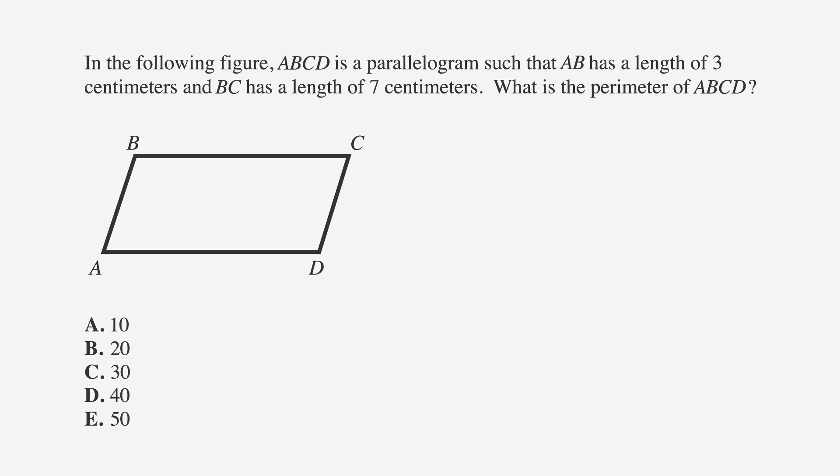Let's use this information to solve a problem you might see on the ACT. In the following figure, ABCD is a parallelogram such that AB has a length of 3 centimeters and BC has a length of 7 centimeters. What is the perimeter of ABCD? A is 10, B is 20, C is 30, D is 40, and E is 50.